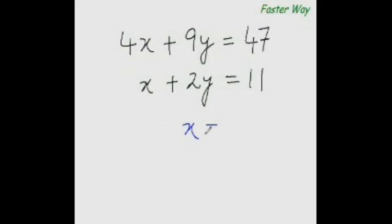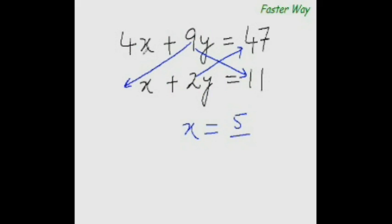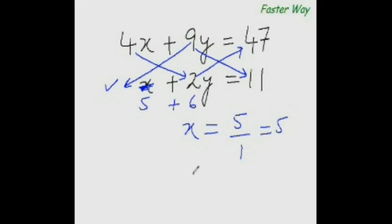For the next example: 9 times 11 is 99, and 2 times 47 is 94. 99 minus 94 is 5 — this is the numerator. For the denominator: 9 times 1 is 9, and 4 times 2 is 8. 9 minus 8 is 1. So x equal to 5. Put x equals 5 in one of the equations: 5 plus what equals 11? 5 plus 6 equals 11, so 2 times what equals 6? 2 times 3 equals 6. So y equal to 3. Answer: x equal to 5, y equal to 3.